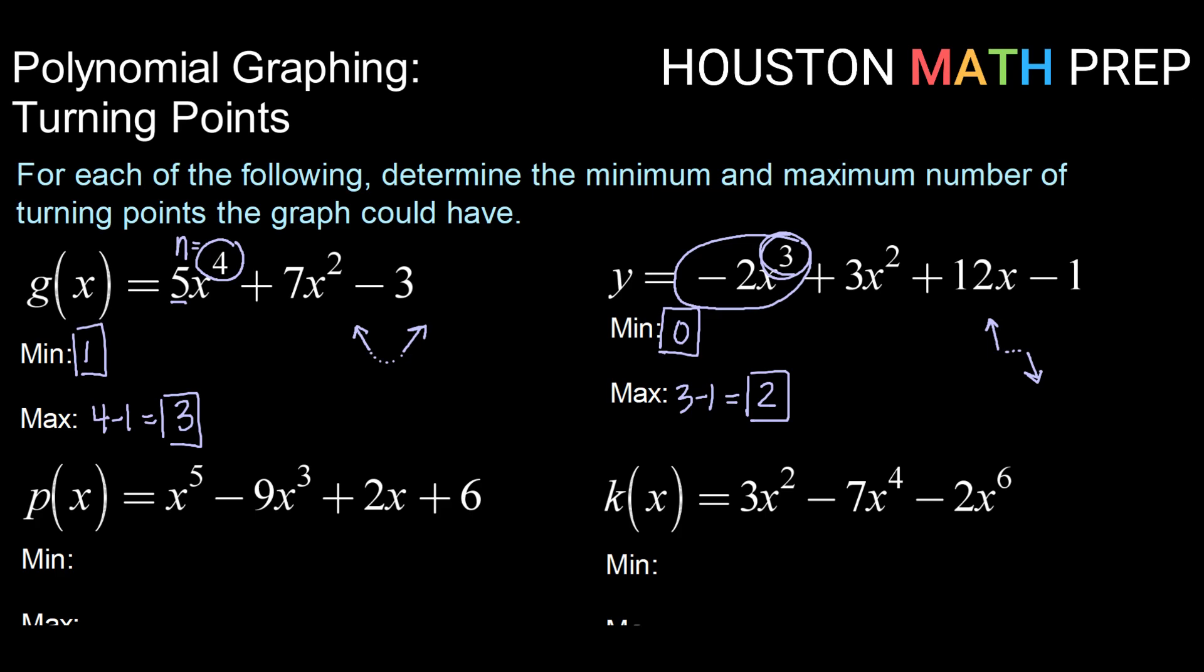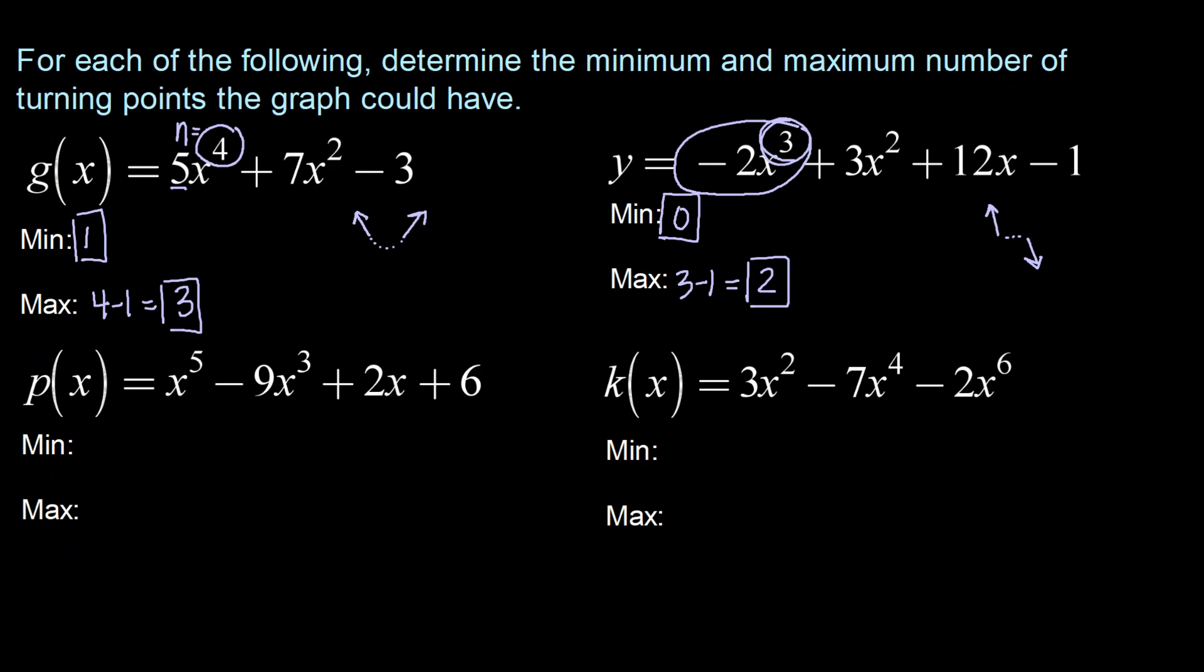Let's look at our bottom two here. For p of x, x equals x to the fifth minus 9x cubed plus 2x plus 6, our lead term here is x to the fifth which makes our degree 5. So our maximum number of turning points will be 5 minus 1 or 4. Always degree minus 1.